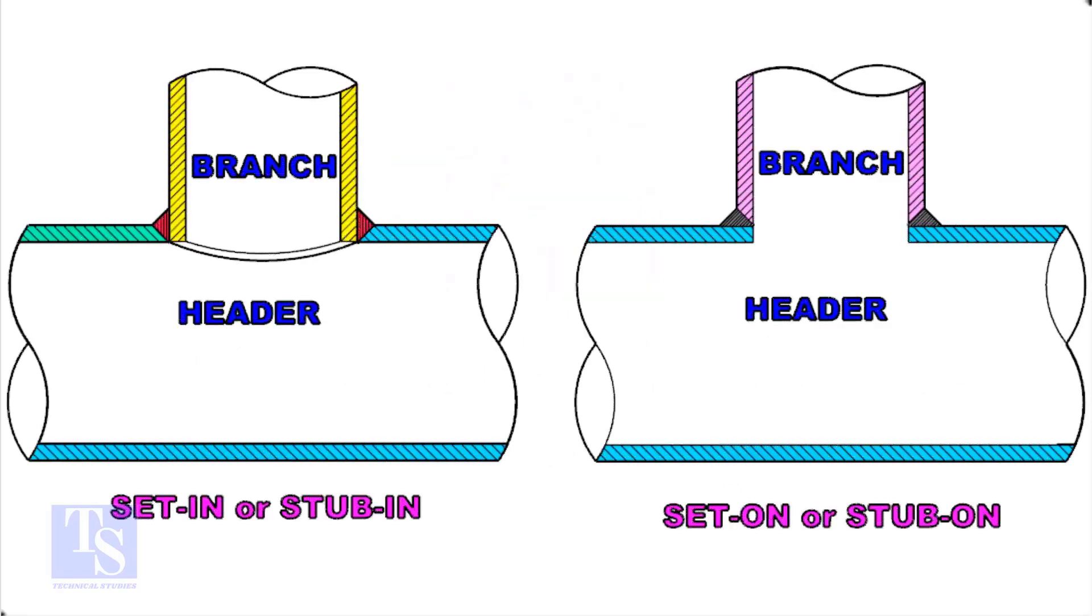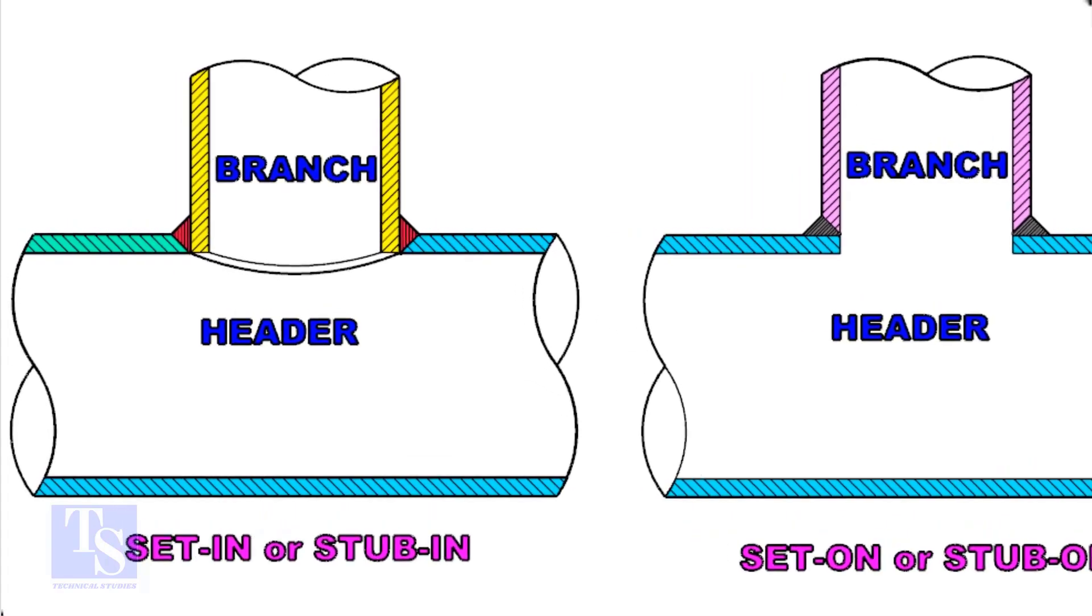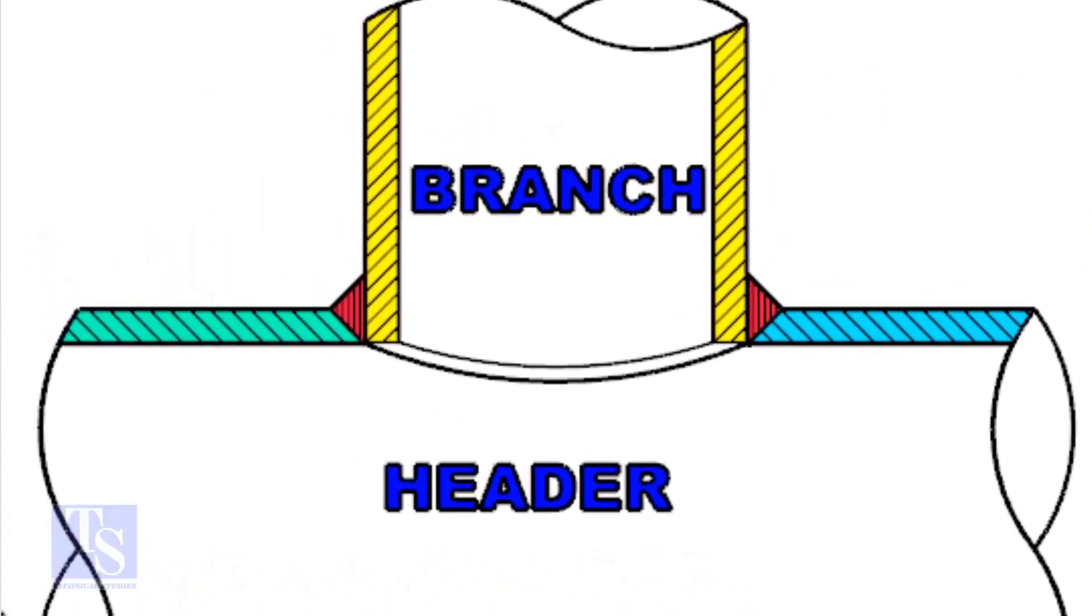Let us check the difference between a stub-in and stub-on connection. Look at the stub-in joint, the bevel is prepared on the header, and the branch pipe is in the header.